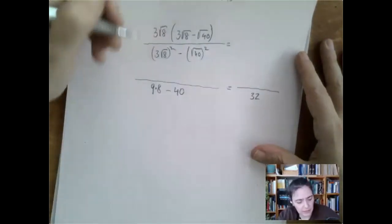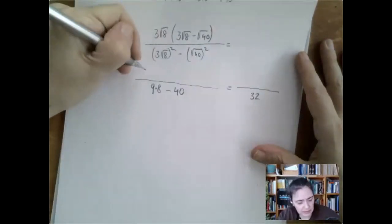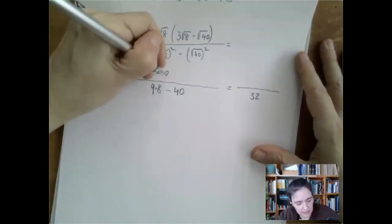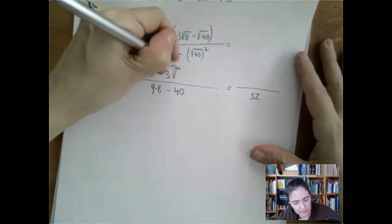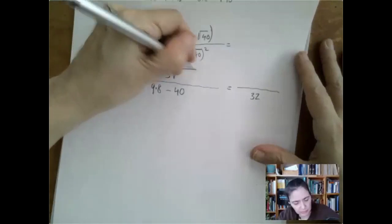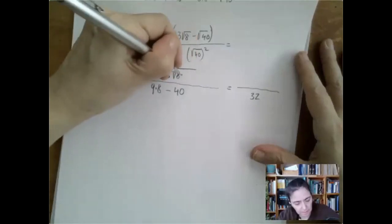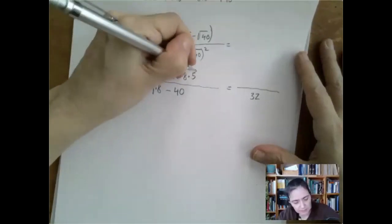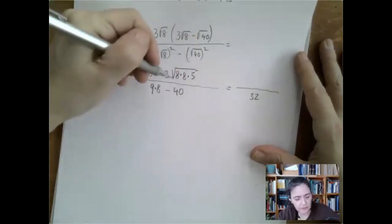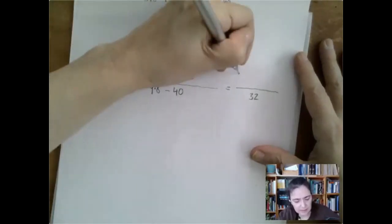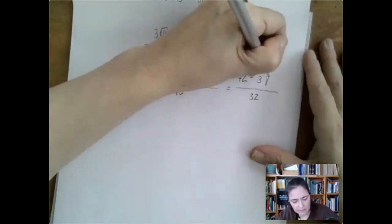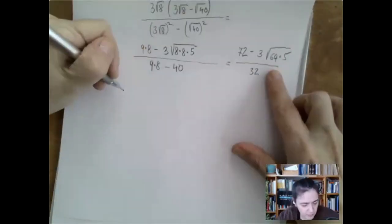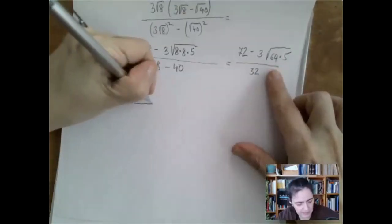The numerator is 9 times 8 minus 3 times square root of 8 times square root of 40. But 40 is 8 times 5, so that means we have a square under the square root.